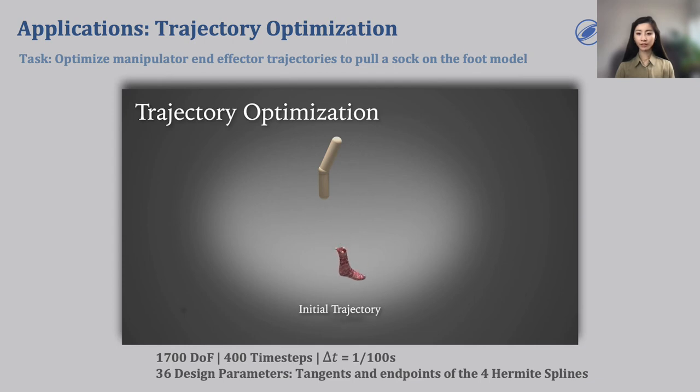Here, we demonstrate a similar task where we seek to optimize the motion trajectory of four end-effectors holding a sock. The goal is to put the sock onto the foot model. The design parameters are again the Hermite spline parameters of the end-effector trajectories. This is a difficult task that shows frequent contact events between the foot and the sock model. And again, our gradient-based optimization can solve this task with very few optimization iterations.